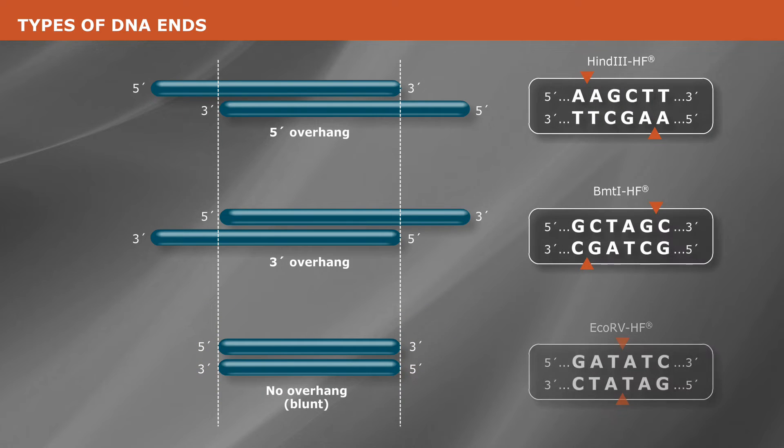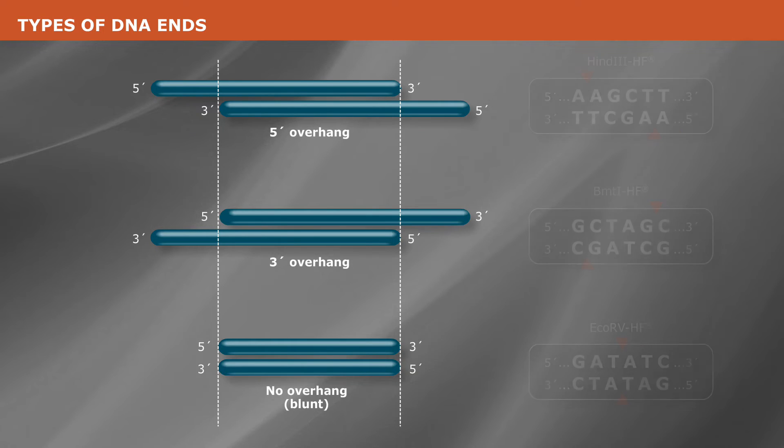All three types of ends are possible if your fragments were generated by restriction enzyme digestion. If your DNA fragment has blunt ends, you can sit back and relax while we demonstrate how to determine if an overhang is a 3' overhang or a 5' overhang.